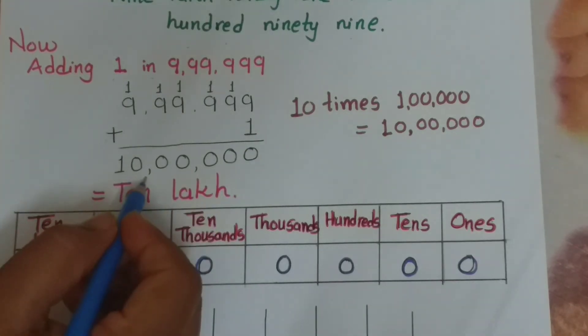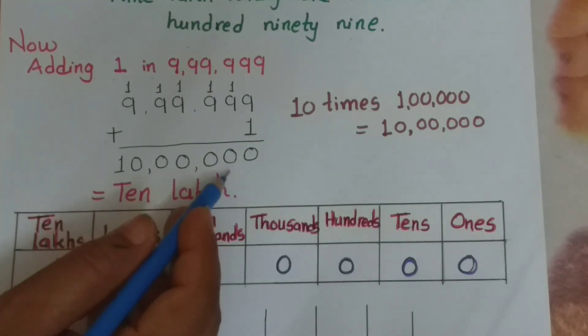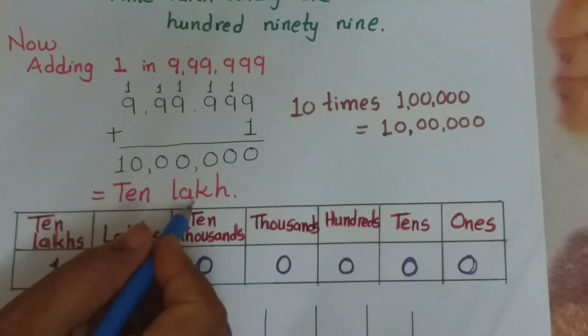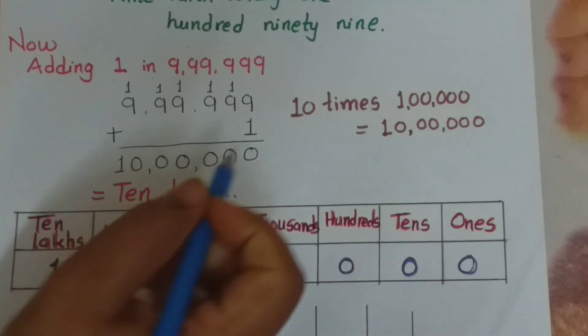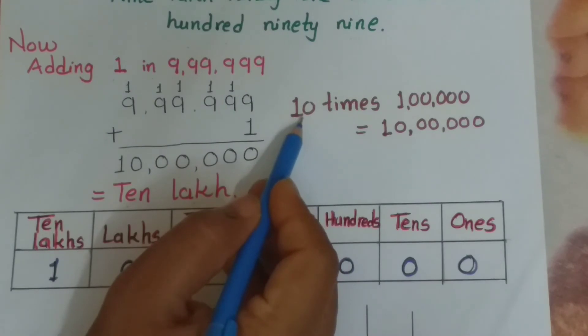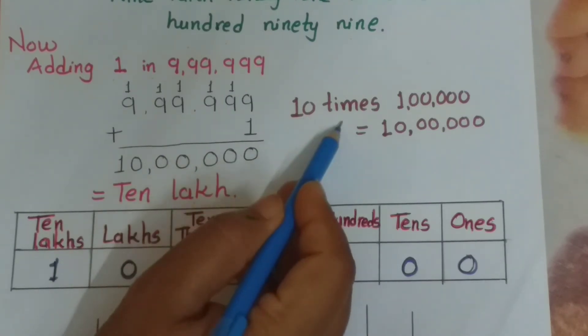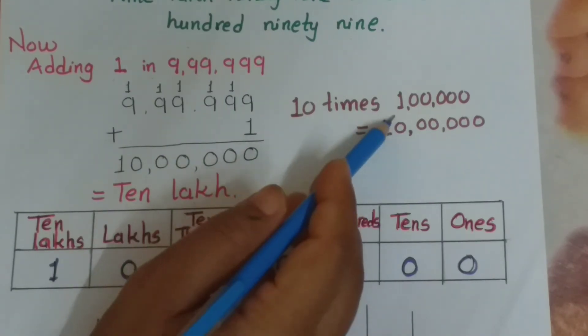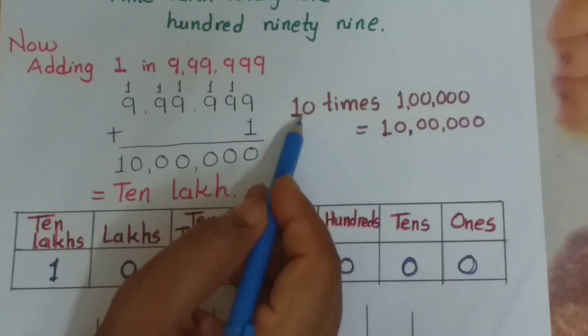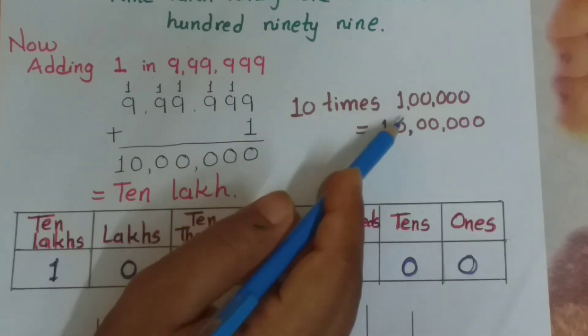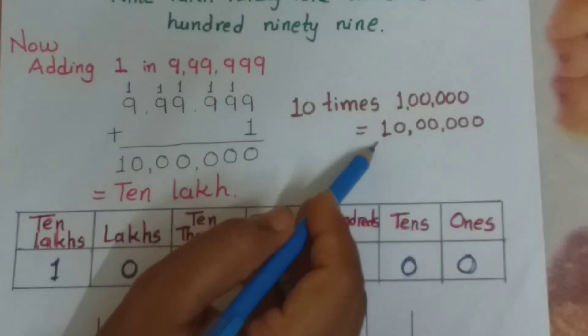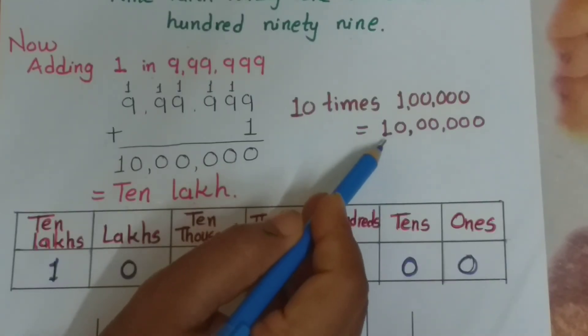10 lakh means 10 times 1 lakh. If 10 times 1 lakh, then we get 10 lakh.